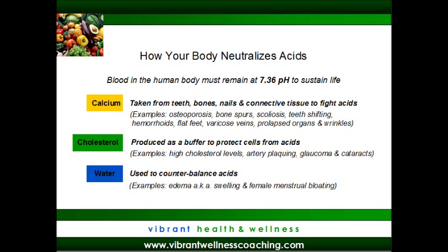When a person is chronically inflamed, they may experience problems such as osteoporosis, bone spurs, scoliosis, teeth shifting, hemorrhoids, flat feet, varicose and/or facial veins, prolapsed organs, sagging, and wrinkling. Another way that the body deals with a high acid load is by producing additional cholesterol as a buffer to protect the cells from these acids.